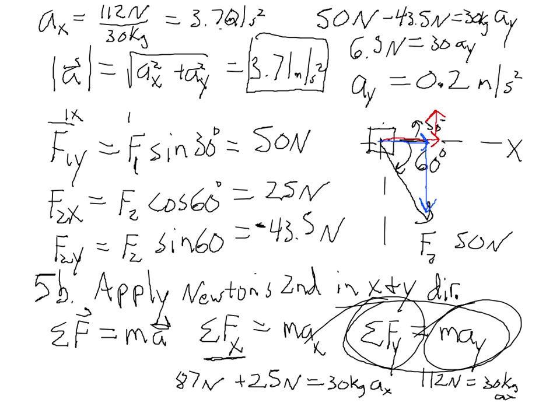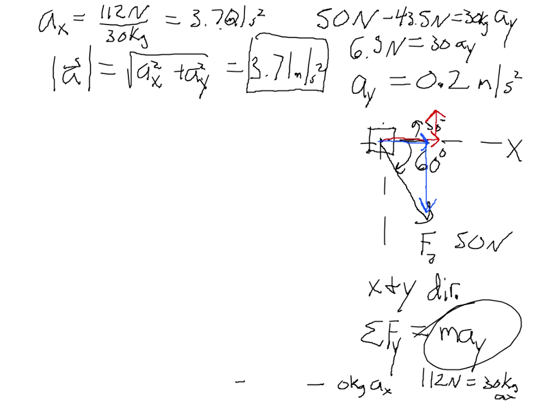If you want to find the direction, then AX is 3.7 this way. AY is 0.2 that way. It's obviously going to be a very small angle. It would be the inverse tangent of opposite over adjacent, 0.2 over 3.7. Inverse tangent gives us an angle of approximately 3 degrees.